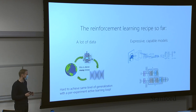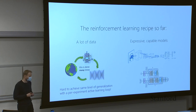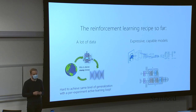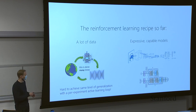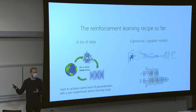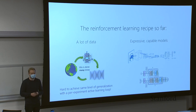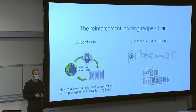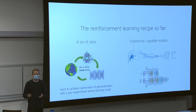This active learning loop is a limiting factor when it comes to reinforcement learning and the amounts of data we can digest. It's hard to achieve the same level of generalization we've seen in supervised learning with this per-experiment active learning loop. What offline reinforcement learning tries to do is get rid of this active data collection loop and instead access big datasets collected offline, assuming we are not able to collect any additional data.